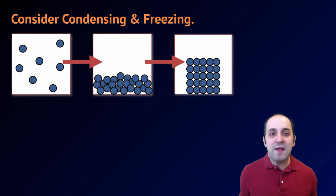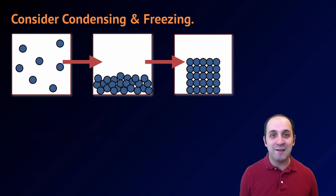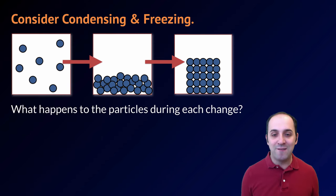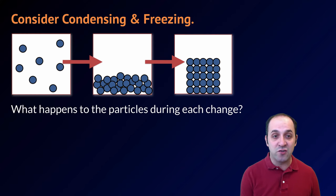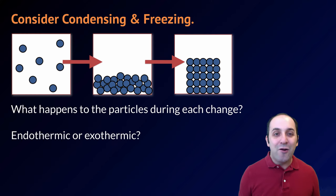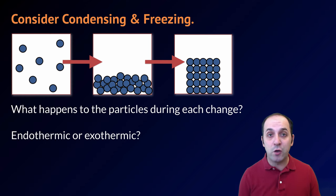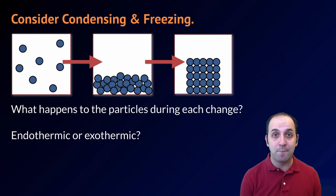Now think about the opposite processes — condensing and freezing a substance. The same questions apply: what happens to the particles of this substance during each of these phase changes? And are these processes endothermic or exothermic, and how do we know? Take a moment and write down your answers and when you're ready let's move on.